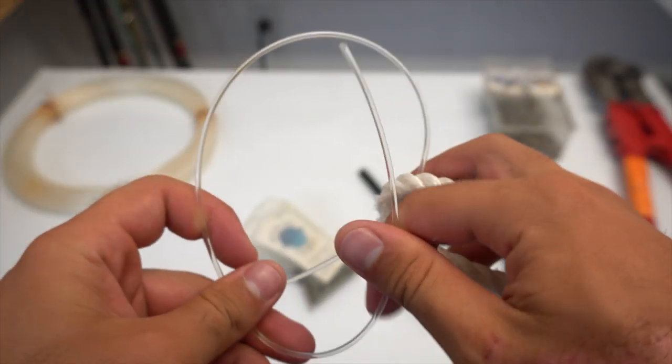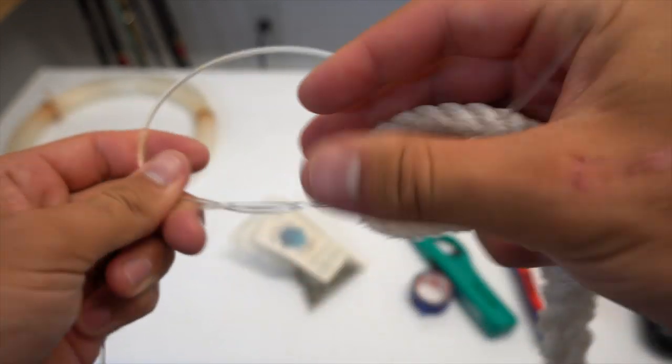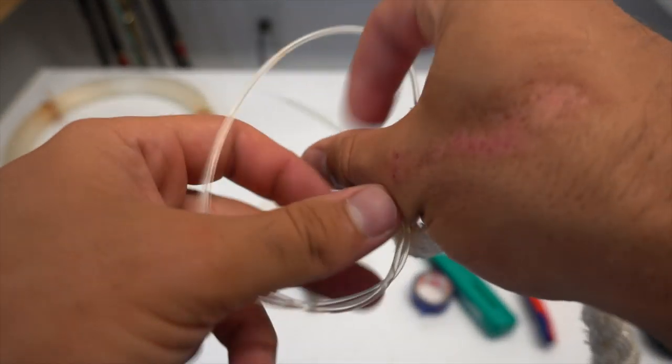All it does is it creates a good loop in the mono and it's not going to tighten down on itself. Feed the line through the loop that you made on the rope and then you start wrapping the mono back around itself about five or six times.